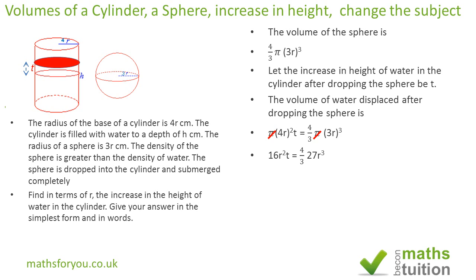If we then rewrite the right hand side as 4 by 3, 27 R squared R, because R squared of R is R cubed.